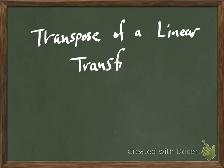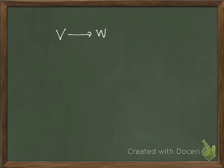Let's talk about transpose of a linear transformation. So suppose I have vector spaces V and W and a linear transformation between them. Let's call it T.